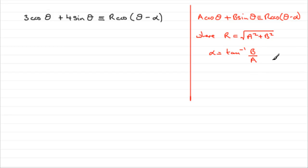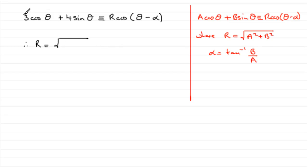If you're unsure of these proofs, just go on my website and you'll find tutorials for this particular type of identity. So when it comes to this question, we can go straight in and say that r equals the square root of — and you can see that a is 3 and b is 4 when we compare it to what we've got over here.